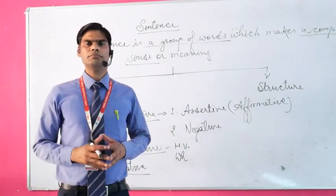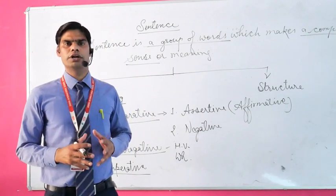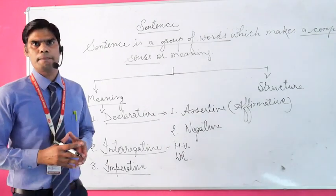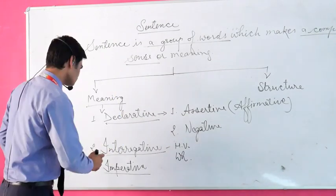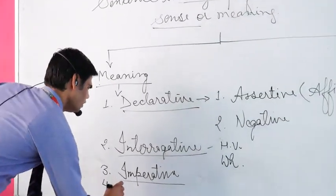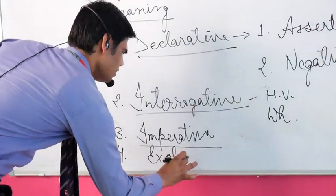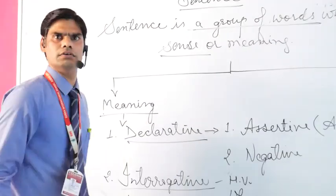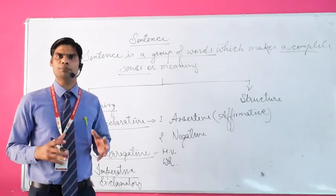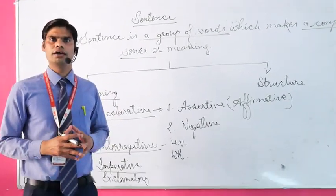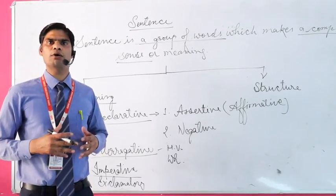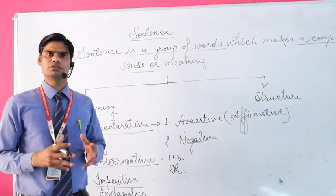The third meaning-based sentence type is imperative. Imperative sentences are mainly based on command, order, advice, suggestions, request, and prohibitions. The fourth type of meaning-based sentence is exclamatory. Exclamatory sentences express surprise, joy, sorrow, and applause or praise.